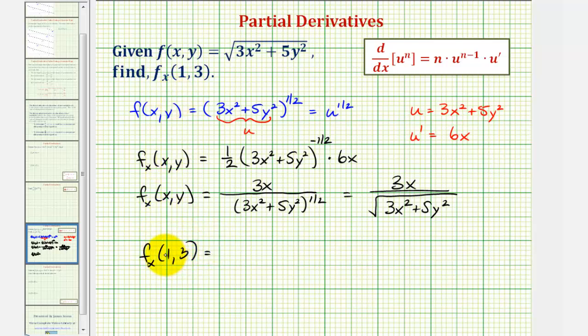So if x is 1 and y is 3, using this form we'd have 3 times 1 divided by the square root of, well if x is 1, we'd have 3 times 1² + 5 times 3². That'd be 3 divided by the square root of, this would be 3 + 45 or 48.